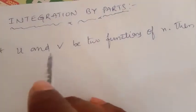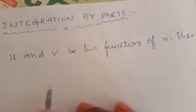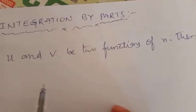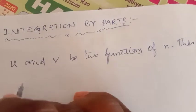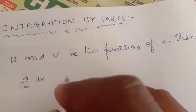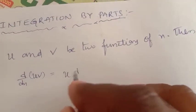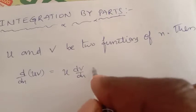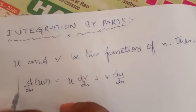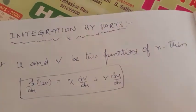Let u and v be two functions of x. In first year differentiation we have the product rule, that is d by dx of uv. We already know that d by dx of uv equals u into dv by dx plus v into du by dx. This formula is also called the product of two functions.